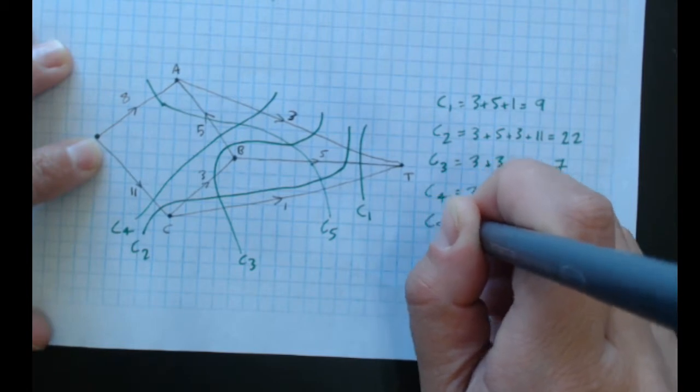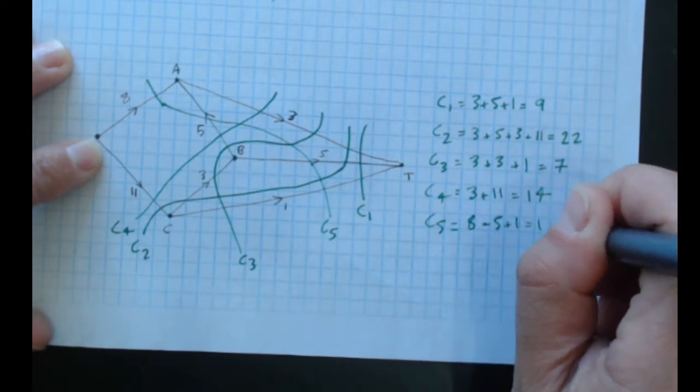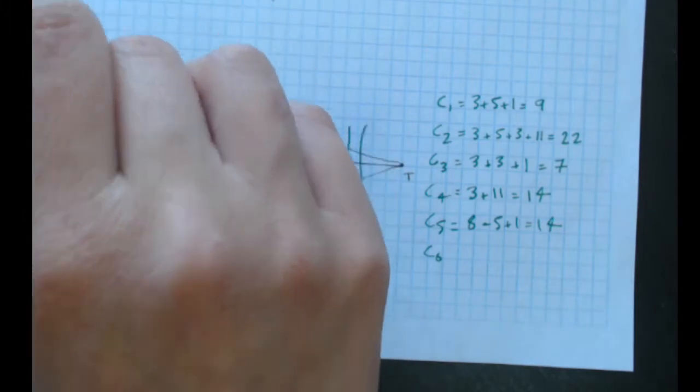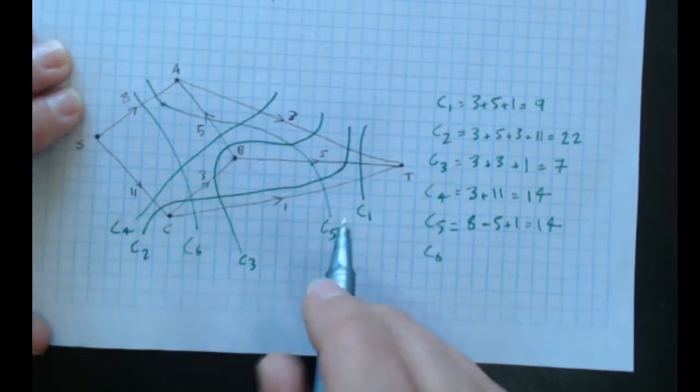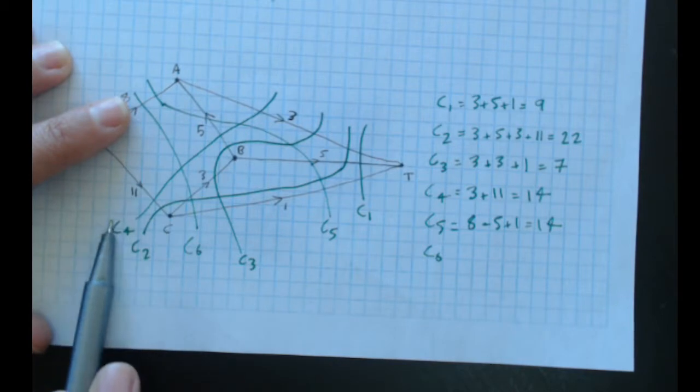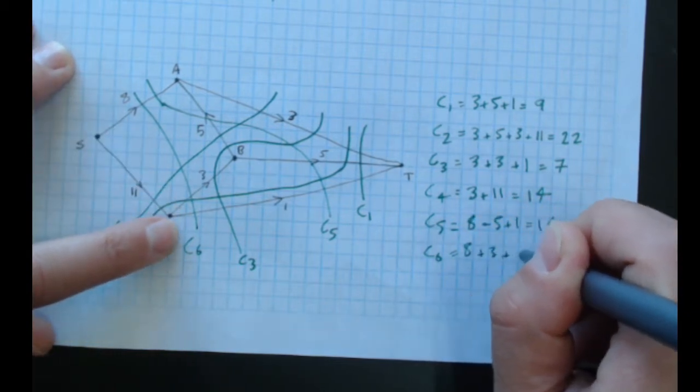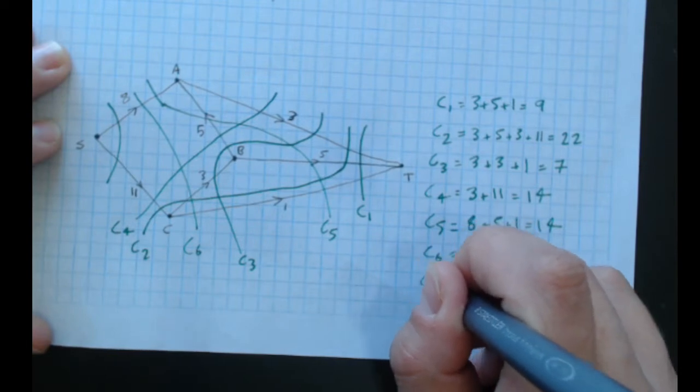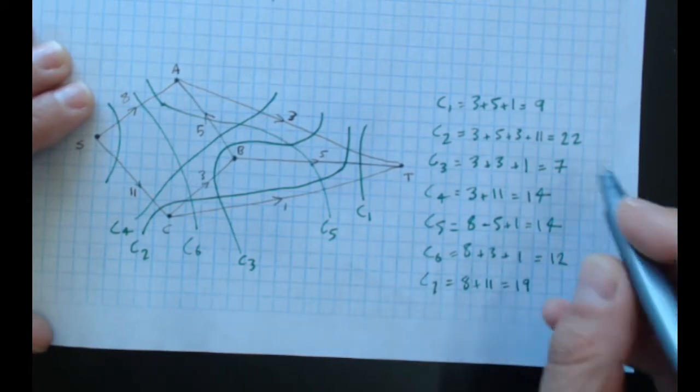C6: I can go through here. So this I've gone through there, there. Don't go looping back on ourselves, that's not helpful at all. So this is 8 plus 3 plus 1, that's 12. And of course we can go straight through here, C7: 8 plus 11 is 19. It's time consuming, it's annoying.